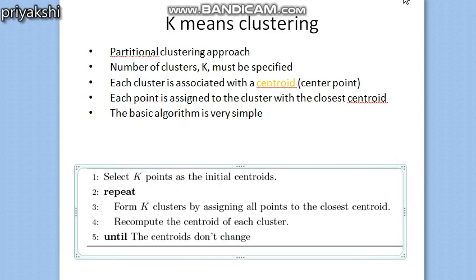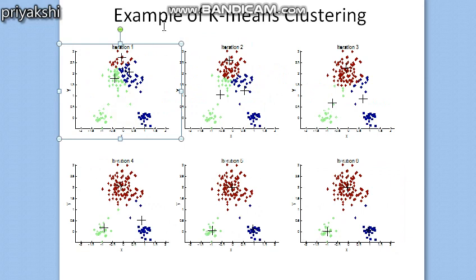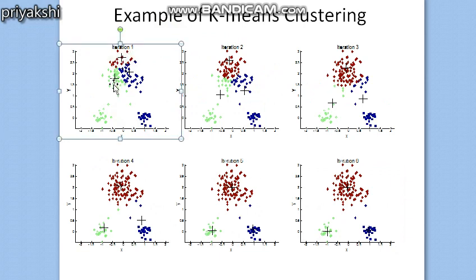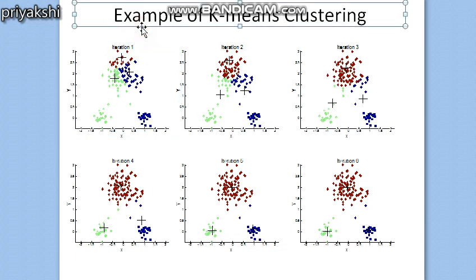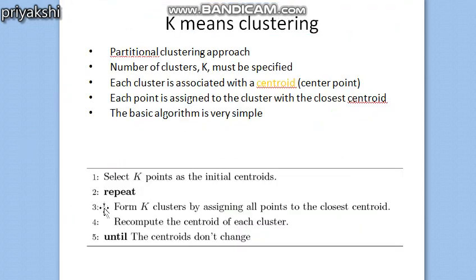Let's understand k-means clustering with a visual example. Here are the data points, and I have set k=3, so there are three centroids. You can choose any data point as the centroid — there is no fixed rule about which point to choose first. You can randomly choose any data point as the initial centroid. These three data points are chosen as the centroids in the first iteration.